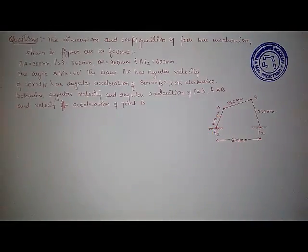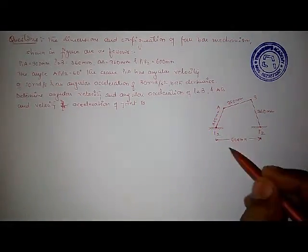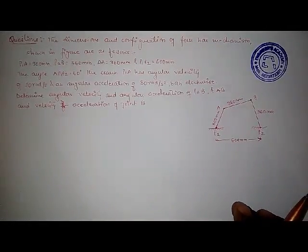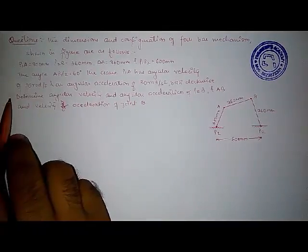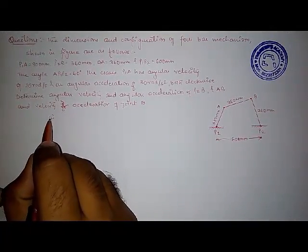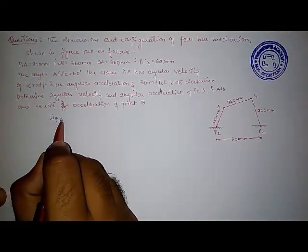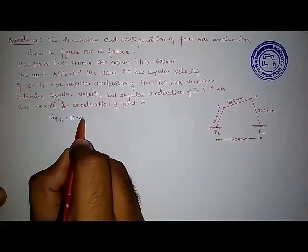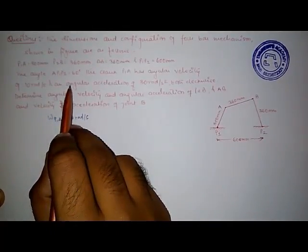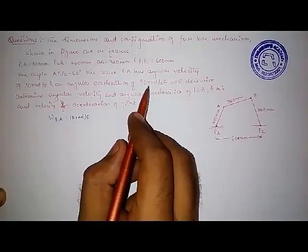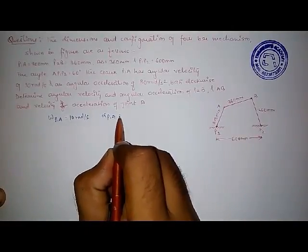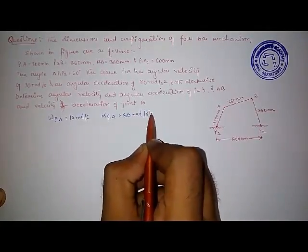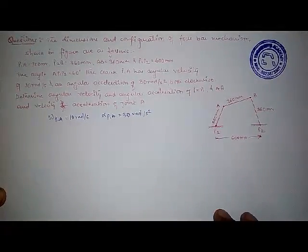Suppose we are given this question with the diagram shown. The crank P1A has an angular velocity of 10 radian per second — so omega of P1A is 10 radian per second — and the angular acceleration is 30 radian per second squared — so alpha of P1A is 30 radian per second squared. First, we need to draw the space diagram, also called the configuration diagram.